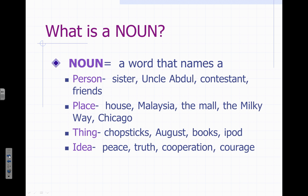People — that's very easy to identify. You can see examples here: sister, Uncle Abdul, a contestant, or friends. Notice that the people can be non-specific, like sister or friends, or they can be very specific, as in Uncle Abdul. We would call Uncle Abdul an example of a proper noun, and we'll hit that when we review more on how to capitalize nouns properly.